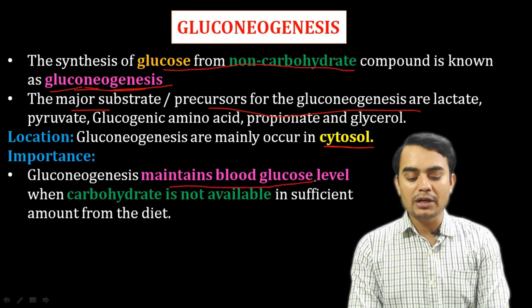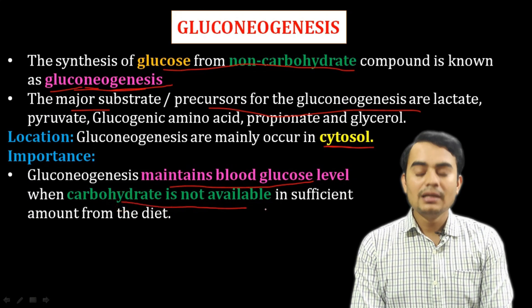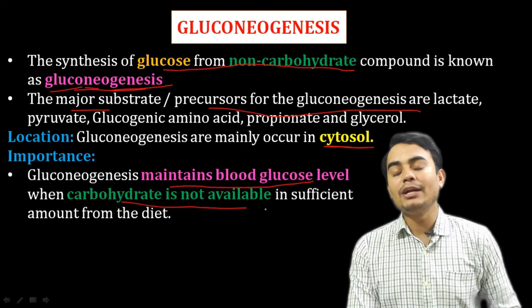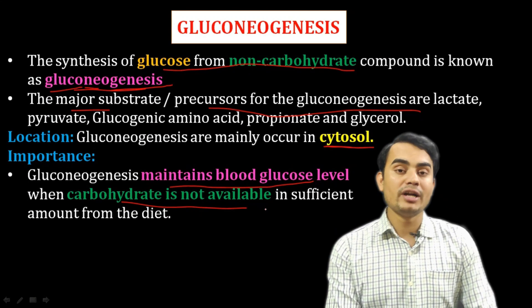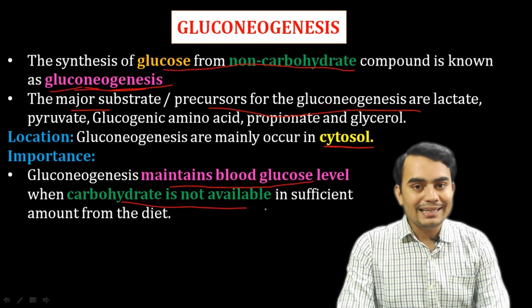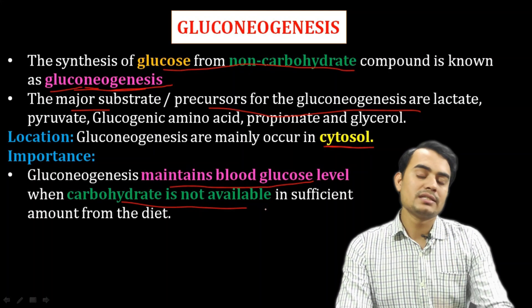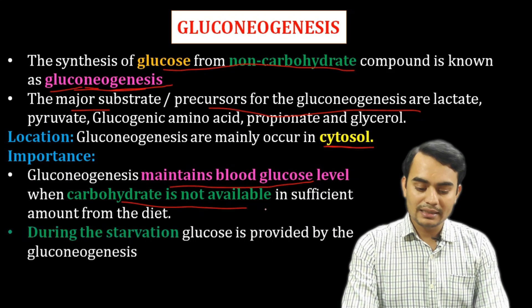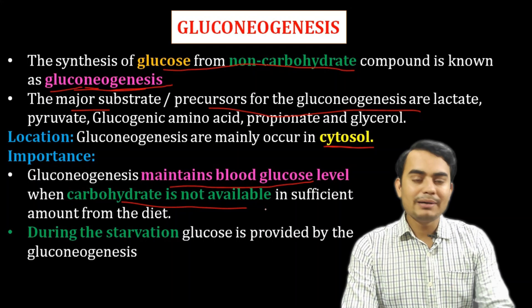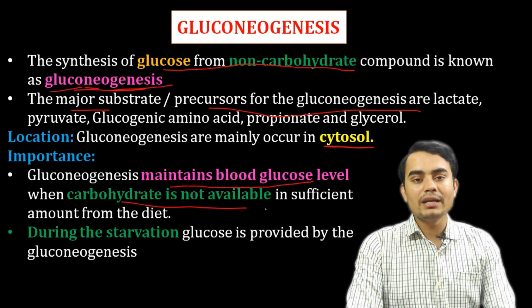The importance of gluconeogenesis is to maintain blood glucose levels when carbohydrates are not sufficiently available in the blood. During starvation conditions, when glucose levels are low in the blood, this process is carried out to maintain blood glucose.